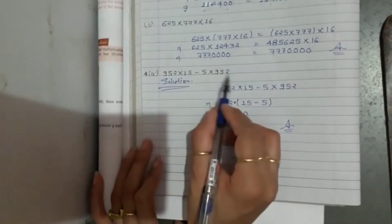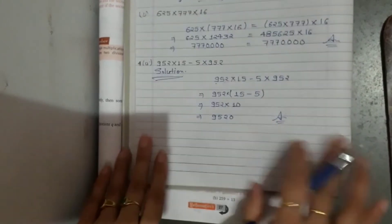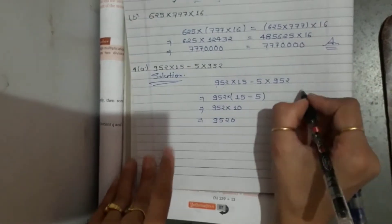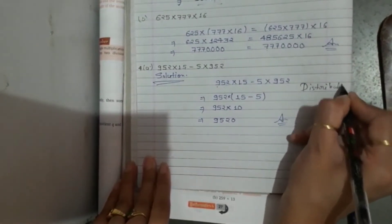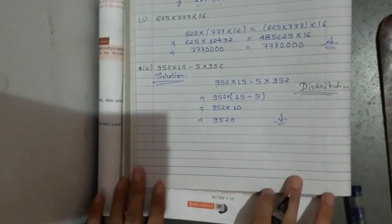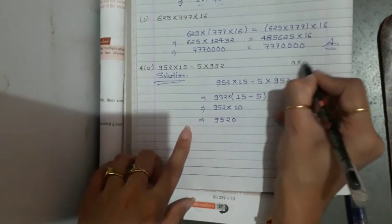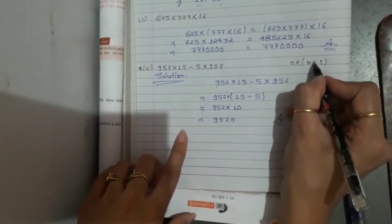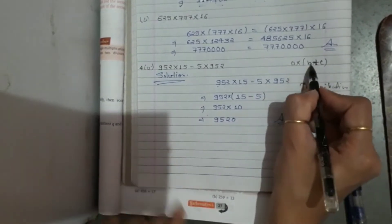If you had multiplied each term separately and then subtracted, it would have been very lengthy. But in simplification we apply a property. The property used here is the distributive property: A into (B minus C) equals A into B minus A into C.